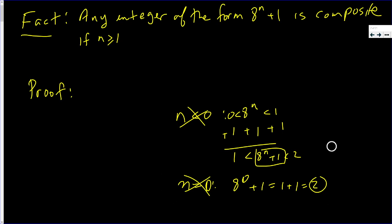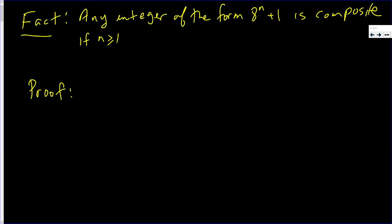But now we need to prove that this is composite if n is 1 or more. If you like seeing proofs like this, subscribe to my channel—that's all we do here. Now watch this beautiful proof.